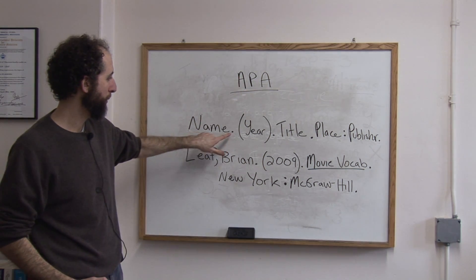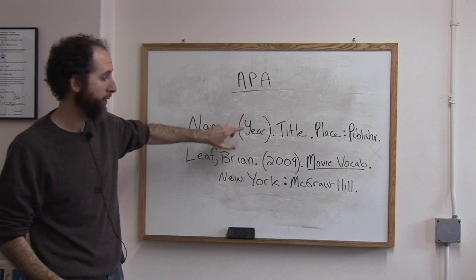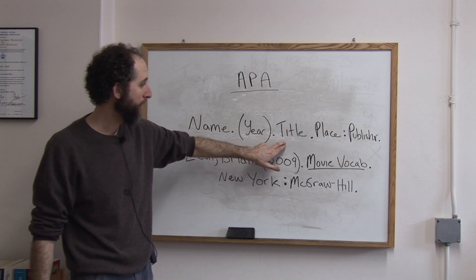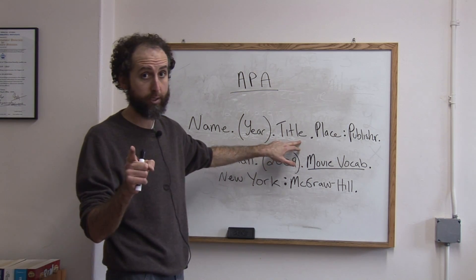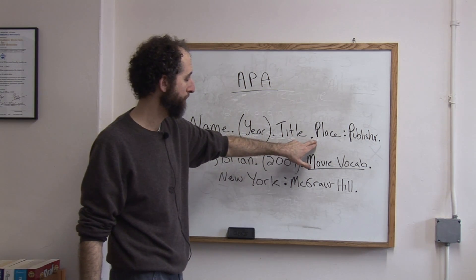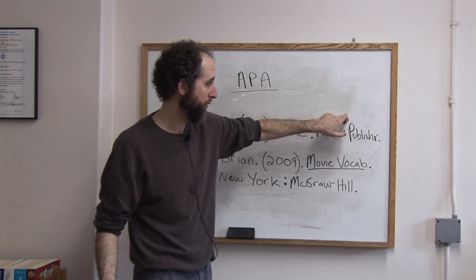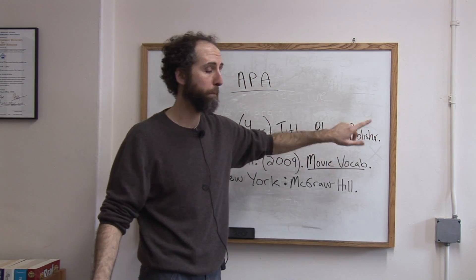Name of the author, period, and then a space. In parentheses, the year the book was published, period, and then a space. The title of the book in italics, period, space. The place where it was published, colon, space, and then the publisher who published it, period.